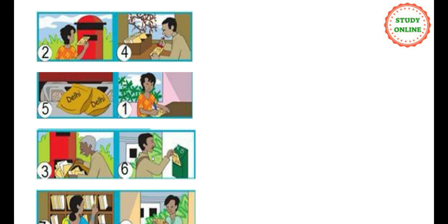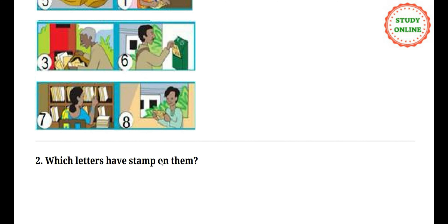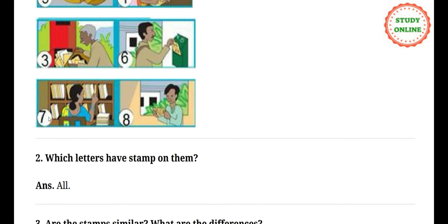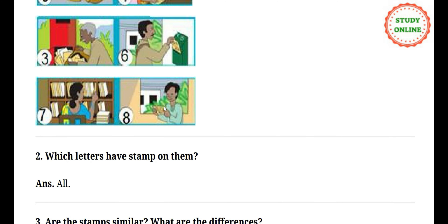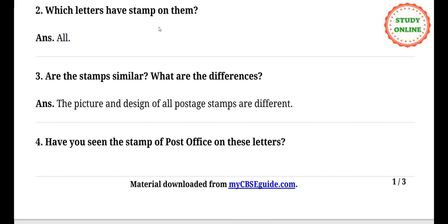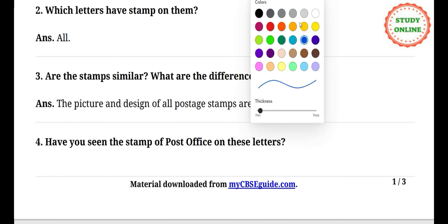Then when that packet reaches Delhi, letters are delivered to each house — that is number seven. Then they are opened and read. Question: which letters have stamps on them? All letters have stamps on them.